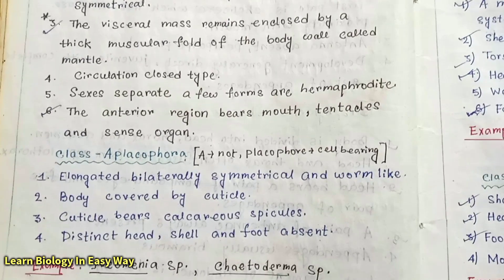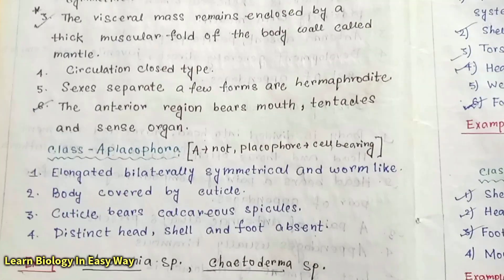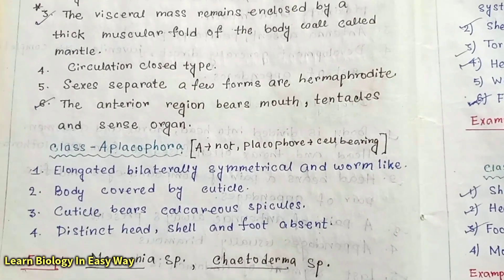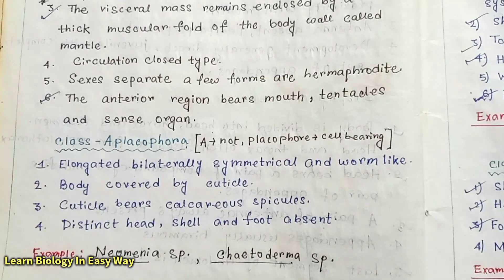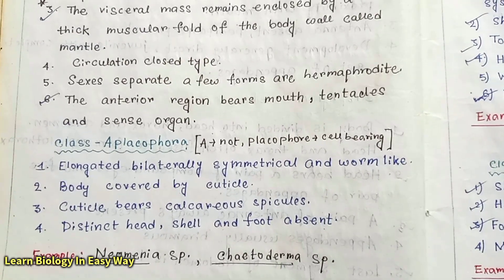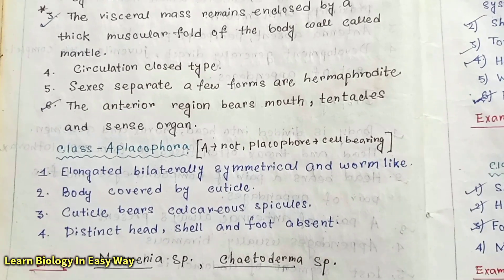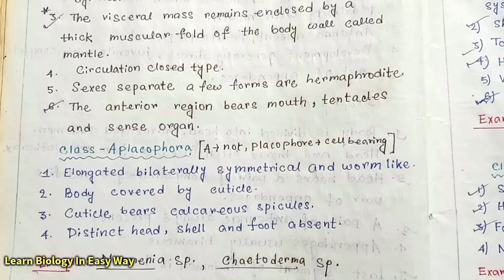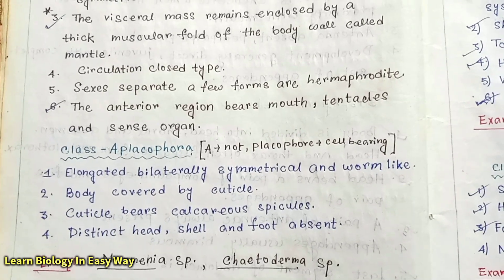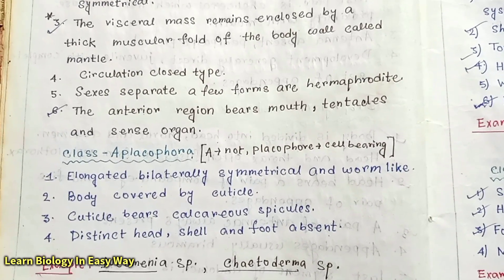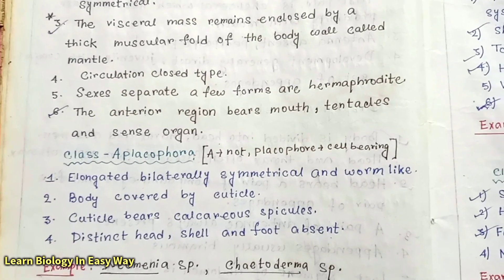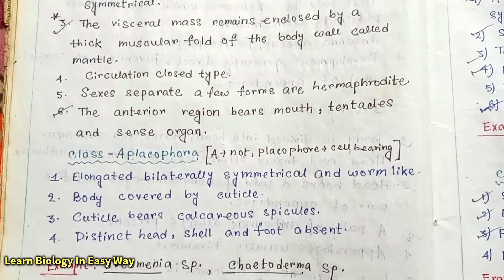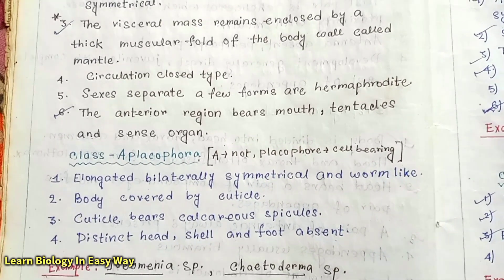Class Aplacophora — 'a' means not, 'placophora' means shell bearing. Body is elongated, bilaterally symmetrical and worm-like. Body is covered by cuticle; the cuticle bears calcareous spicules. Distinct head, shell and foot are absent. Examples: Neomenia sp., Chaetoderma sp.